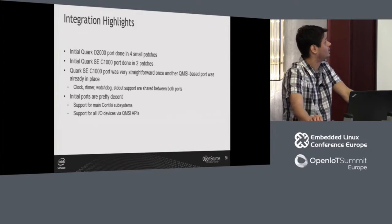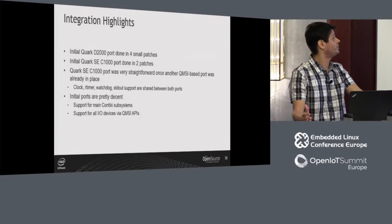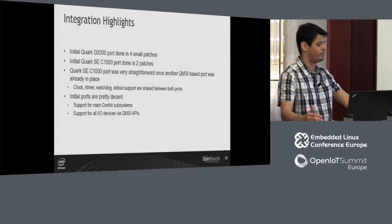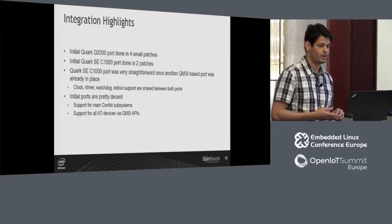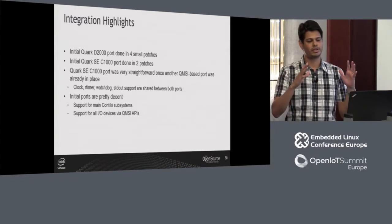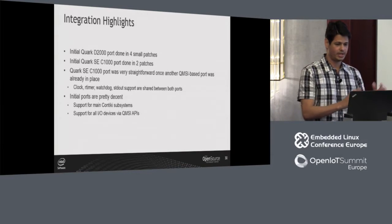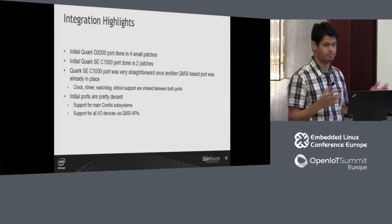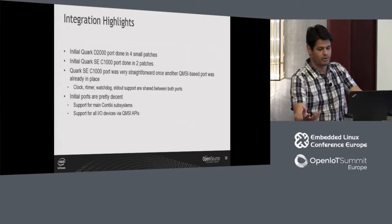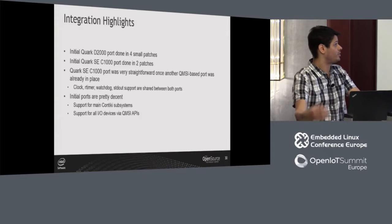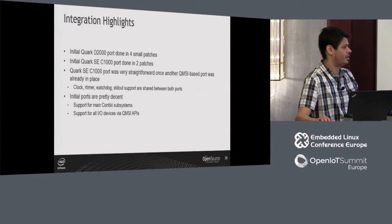Once we did it for Quark D2000, doing it for Quark SE should be even easier because we already have all the infrastructure in place. Working for Quark SE was pretty much two patches. One patch moved everything that was in the D2000 directory and would be common between D2000 and Quark SE to a common place. The second patch was basically: let's build the image for Quark SE, which meant writing the main function and makefiles to reuse the QMSI components. It was very straightforward once we already had another QMSI-based port.